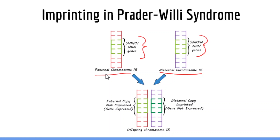For example, if during development a mutation knocks out the paternal copy of the NDN gene on chromosome 15, this person will not have the products of this gene and will express Prader-Willi syndrome. Conversely, if the maternal copy of the NDN gene were lost, this would have no consequences because the maternal copy is normally not expressed — that person would be a healthy subject.